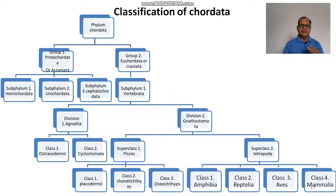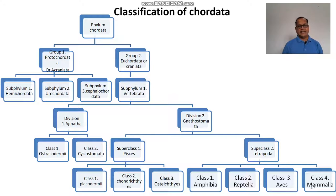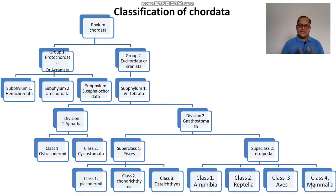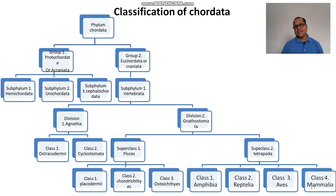Vertebrates can be divided into two divisions: Division Agnatha and Division Gnathostomata. Division Agnatha is divided into two classes — Class Ostracodermi and Class Cyclostomata. Division Gnathostomata is divided into two superclasses: Superclass Pisces and Superclass Tetrapoda. Superclass Pisces may be divided into three classes: Placodermi, Chondrichthyes, and Osteichthyes.